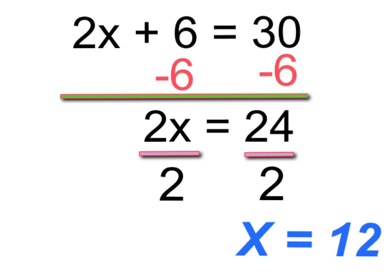You simply do the opposite of plus 6 to both sides which is minus 6. And then you get 2x is equal to 24. The opposite of multiplying by 2 is dividing by 2 and you get your x value which comes out to be 12.